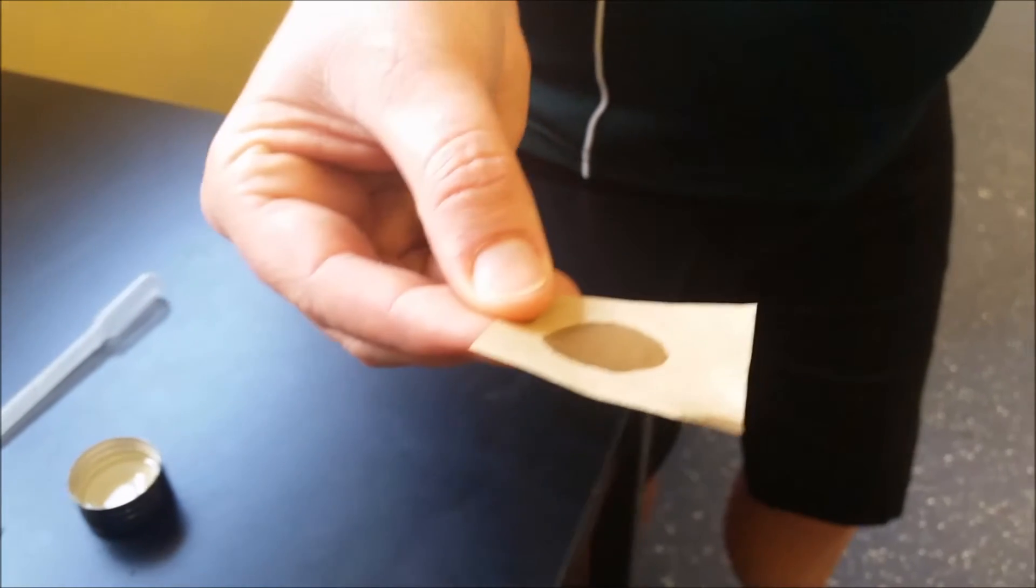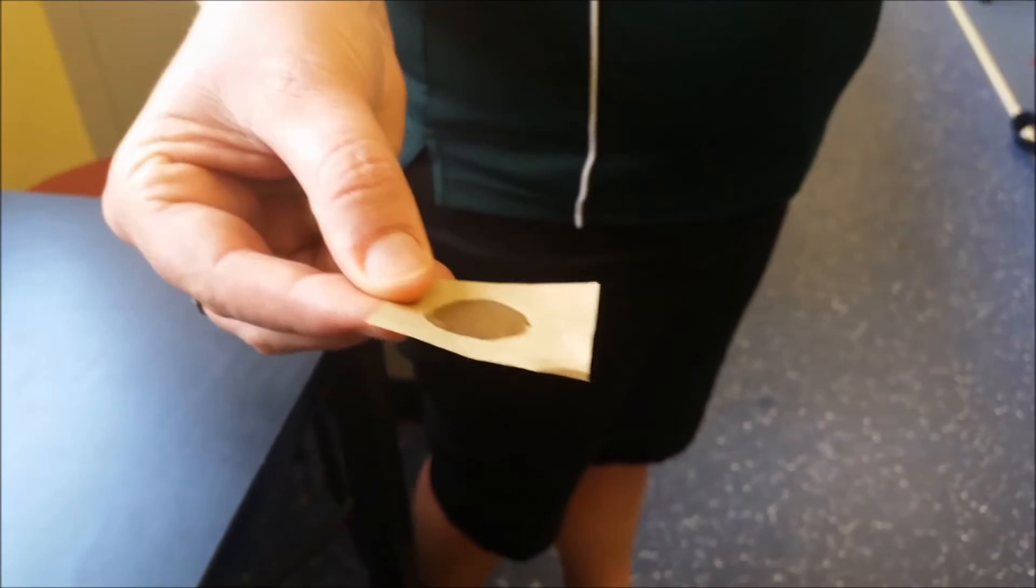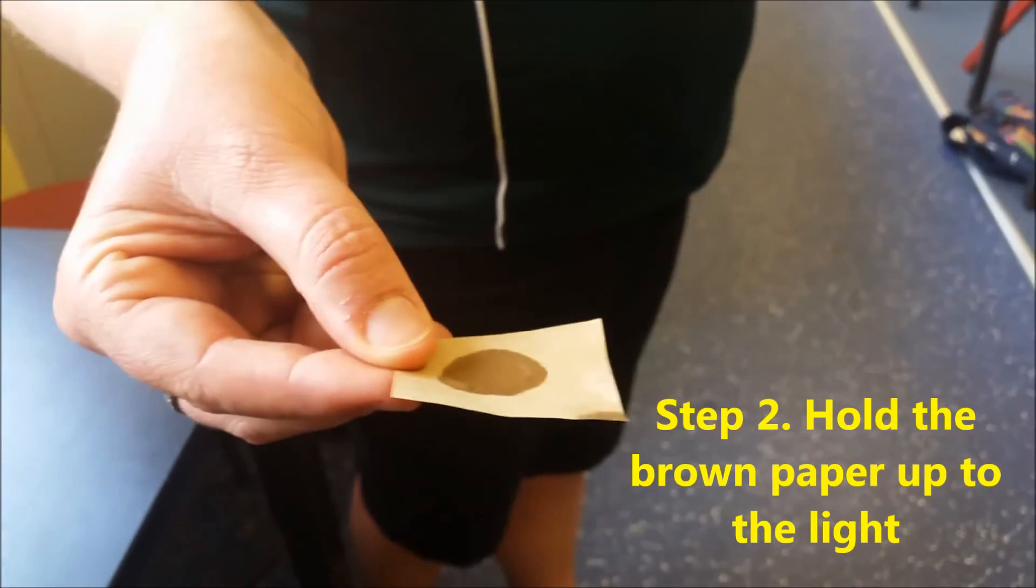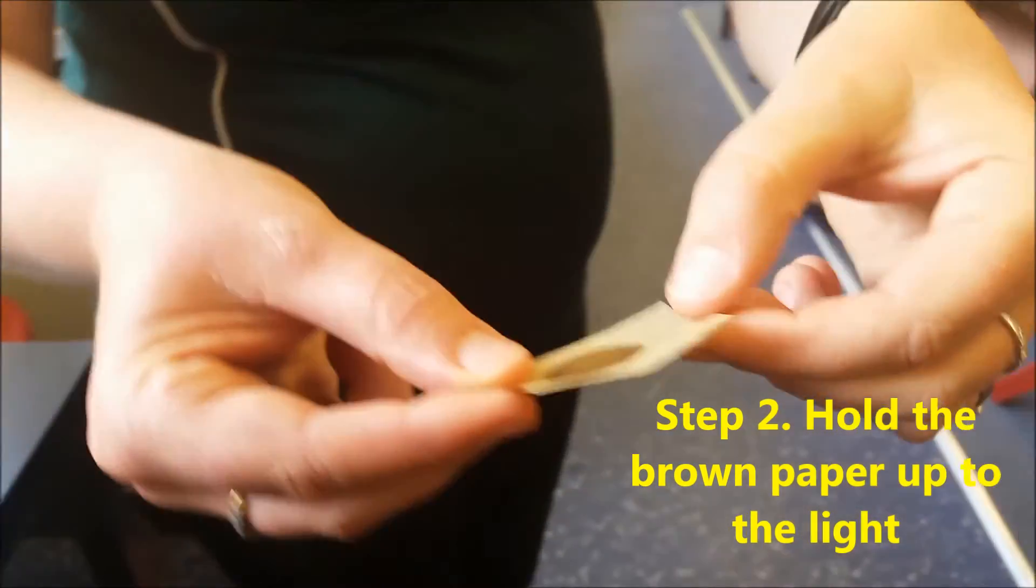Either way, the positive test result, the next thing is to then hold the brown paper up to light, whether that is through the window or your light in the classroom, and you should see a difference.